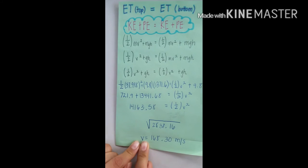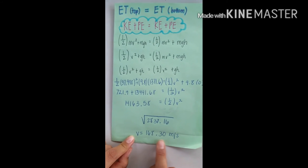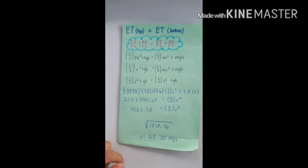So, our velocity is 168.30 meters per square. Okay guys, so I hope you guys learned something new today. Thank you for watching. Bye!